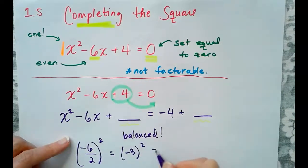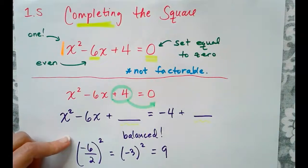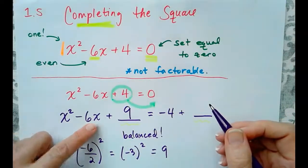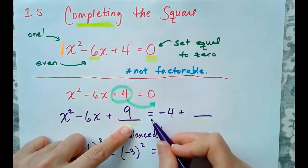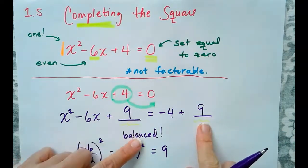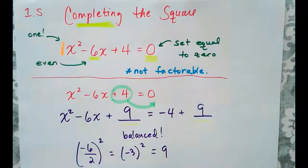So -3 squared is 9. And that is what we add to both sides. x² - 6x + 9 equals -4 + 9. Note that we have kept our equation balanced by adding 9 to both sides.